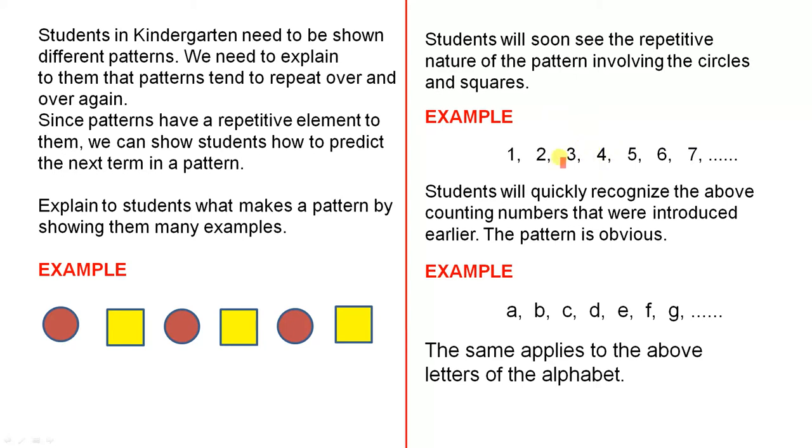This example here: one, two, three, four, five, six, seven, and so on. Students will quickly recognize the above counting numbers that were introduced earlier. The pattern is obvious. They're just the counting numbers and they keep increasing by one.